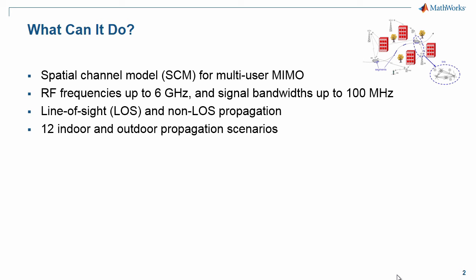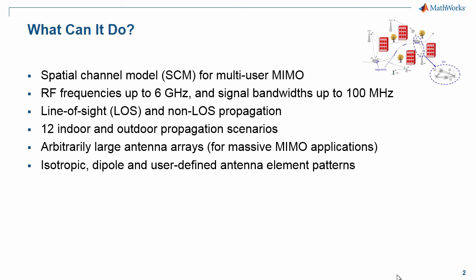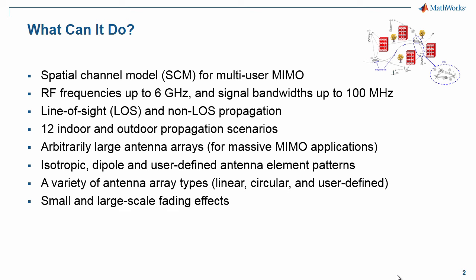12 indoor and outdoor propagation scenarios. These scenarios include urban, suburban, and rural examples. Arbitrarily large antenna arrays for massive MIMO applications. Isotropic, dipole, and user-defined antenna element patterns. A variety of antenna array types: linear, circular, and user-defined. Small and large-scale fading effects. The former is useful for point-to-point link simulations and the latter is useful for multi-user system level simulations. Channel filtering in a streaming fashion. This is an enhancement beyond the original Winner code.